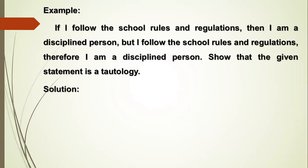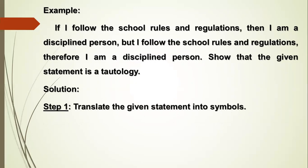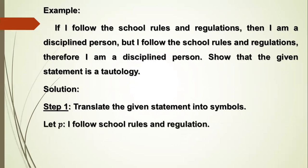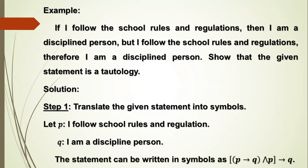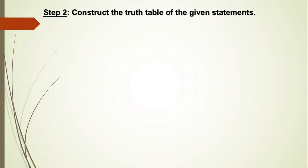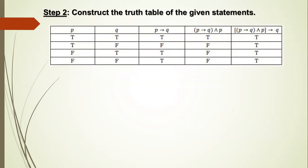Solution. Step 1: Translate the given statement into symbols. Let P: I follow the school rules and regulations. Let Q: I am a disciplined person. The statement can be written in symbols as (P → Q) ∧ P, then Q. Step 2: Construct the truth table of the given statements. The table has columns: P, Q, P → Q, (P → Q) ∧ P, and (P → Q) ∧ P → Q.